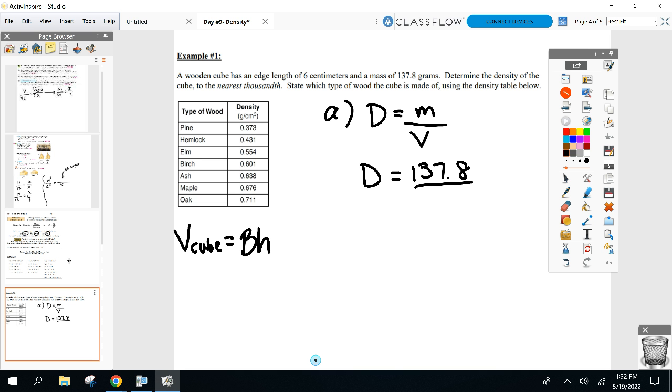Base times height, where all the edges are the same. This cube is 6 by 6 by 6. Can somebody help me find the volume of the cube? Six times six for the base times six for the height equals 216. Please read the rounding directions - thousandths. How many numbers after the decimal? Three numbers after the decimal.